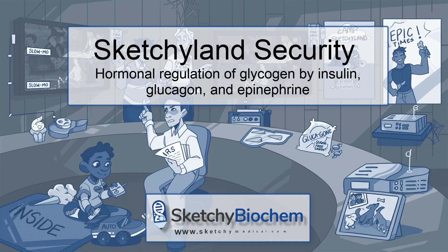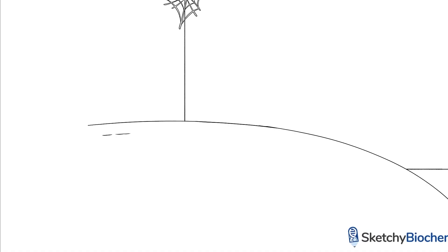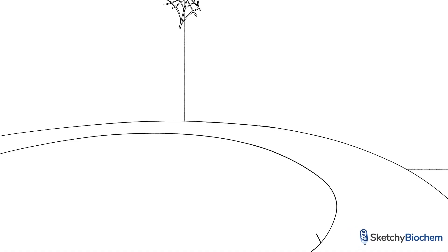Let's check out the security room near the cursed castle at Sketchyland to understand how insulin, glucagon, and epinephrine regulate the synthesis and degradation of glycogen.